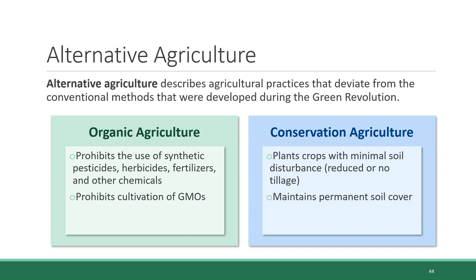And finally, crop rotation is encouraged as a practice in conservation agriculture, meaning not growing the same crop on the same plot of land season after season, but rather rotating through a variety of different crops. So, as you can see, these are two distinct approaches, both with their own priorities and their own merits.